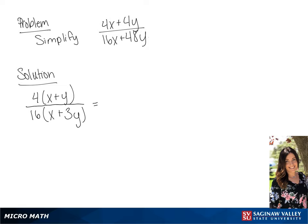4 over 16 is going to simplify to be 1 over 4. We will get a final answer of x plus y over 4x plus 12y.